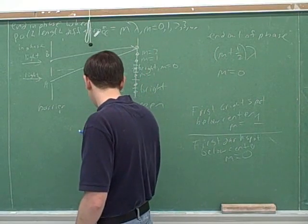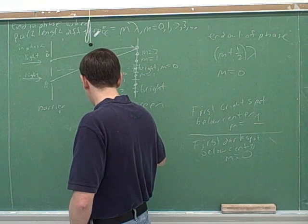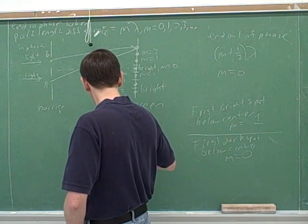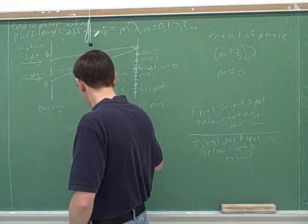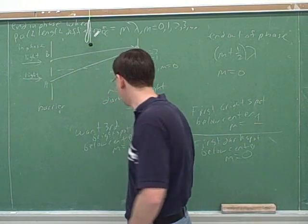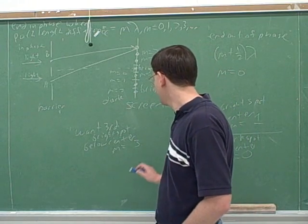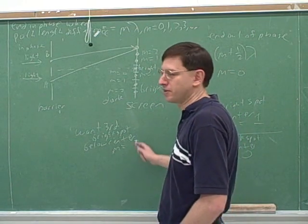So let's say we want the third bright spot below the center. What would M be for the third bright spot below the center? And what order is that? Yeah, third order.